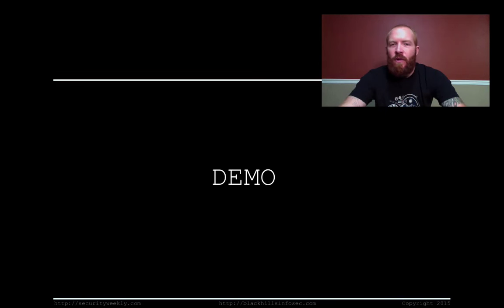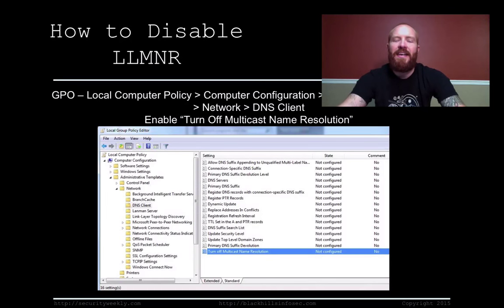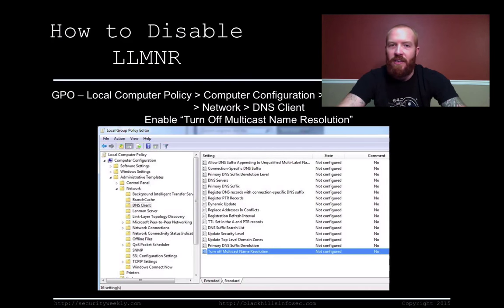As you can see, these are two things we're going to want to kill off so employees don't have their password hashes stolen by somebody listening on the network with Responder. How do we kill these? For LLMNR, it can be disabled with GPO — beautiful. Open up your local computer policy, computer configuration, administrative templates, network, DNS client. Enable 'Turn off multicast name resolution.' The caveat: test it out first. Don't just turn it off for everybody — test on a few hosts and maybe a subnet or two, as there's a potential you could break something.